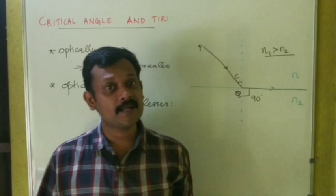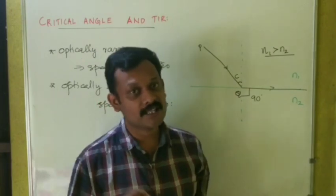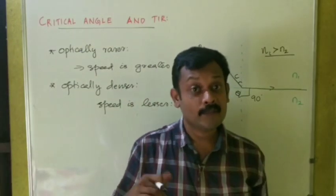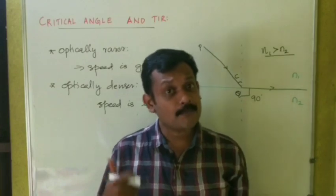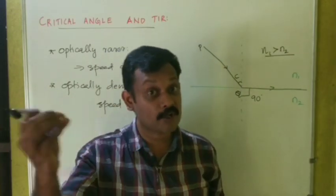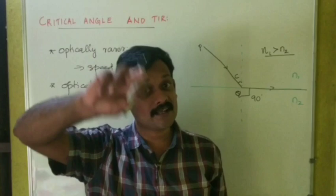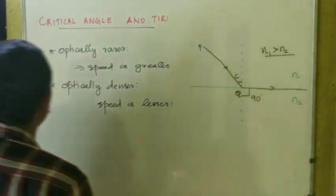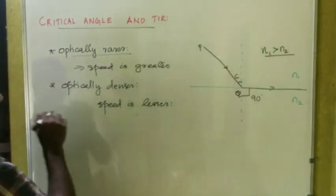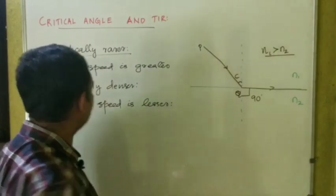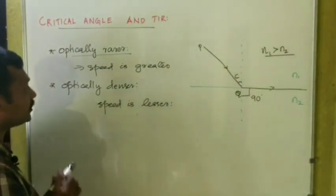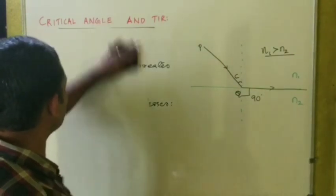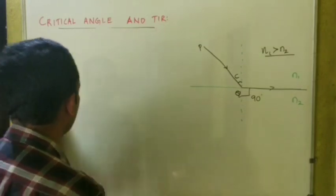In an optically denser medium, light travels with a smaller speed. When it comes to light, air is a rarer medium and glass is a denser medium. When it comes to a wave, where the speed is greater, that is a rarer medium; where the speed is lesser, that is a denser medium. So, optically rarer medium means the speed of light is greater, and optically denser medium means the speed of light is smaller.